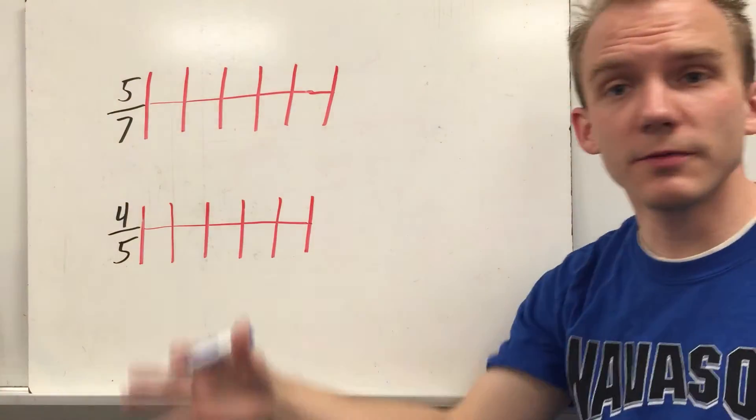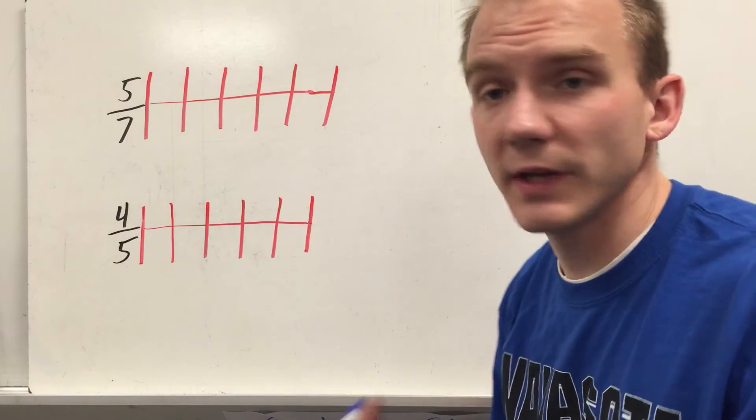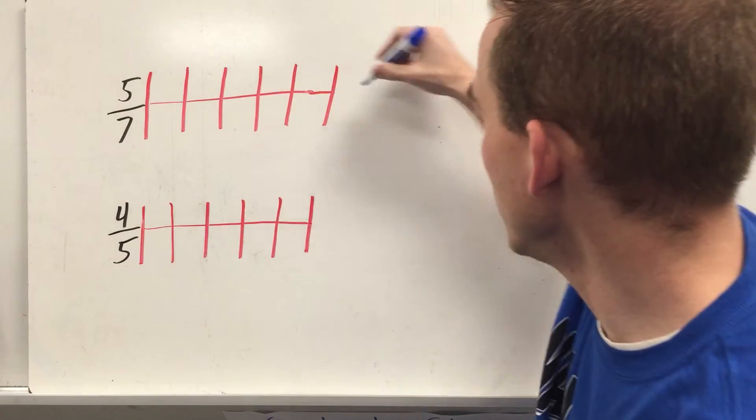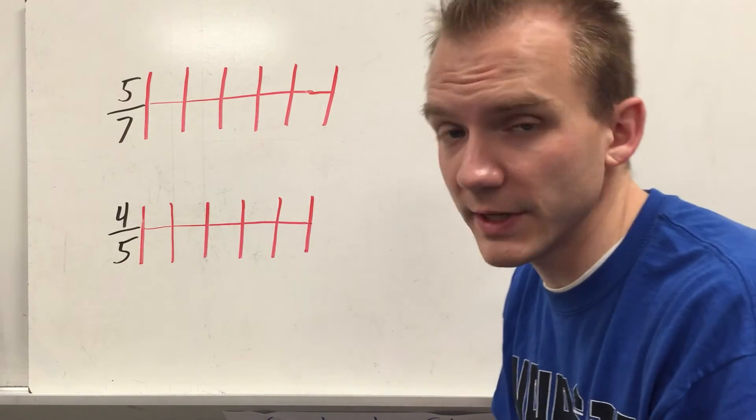Let's do it again with some new fractions. 5 sevenths and 4 fifths. In this case, we have our equivalency charts all set up, ready to be filled in. You might need to extend them further. Maybe I find I don't have a common denominator so I gotta extend it further. That's fine.